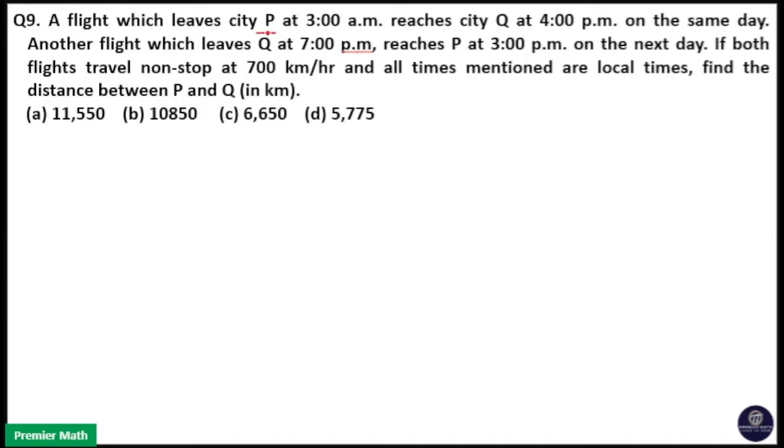A flight which leaves city P at 3 a.m. reaches city Q at 4 p.m. on the same day. Another flight which leaves Q at 7 p.m. reaches P at 3 p.m. on the next day. If both flights travel non-stop at 700 km per hour and all times mentioned are local times, find the distance between P and Q in kilometers.